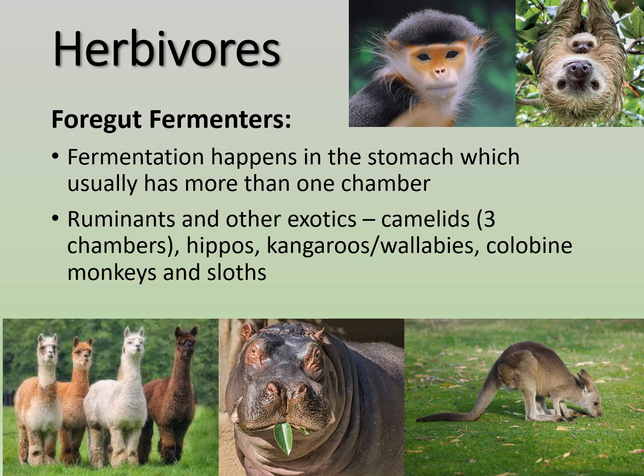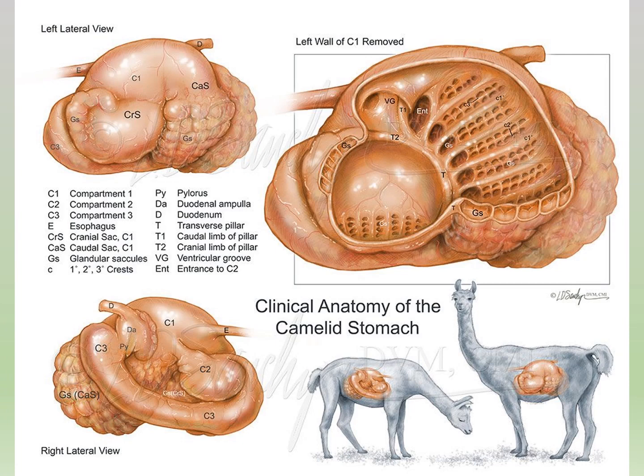Hippos, kangaroos, wallabies, colobine monkeys, and sloths also have multiple chambers in their gut and perform fermentation, though they don't have as many compartments as ruminants. They still harbor microbes and carry out fermentation.